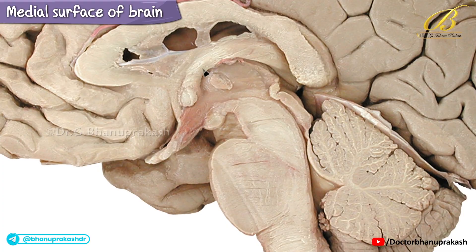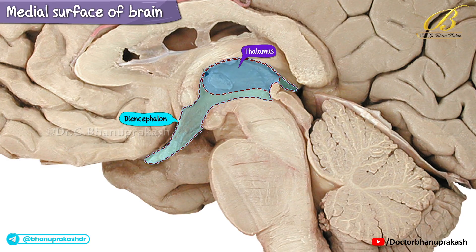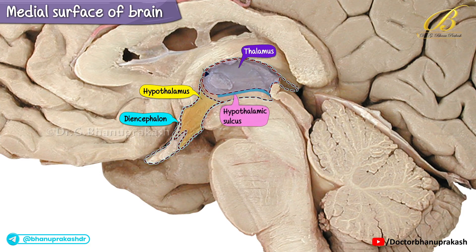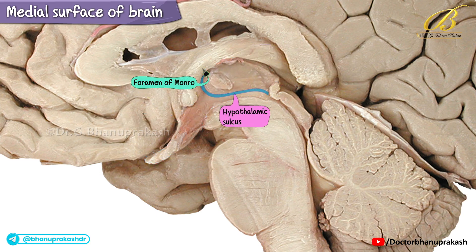This mid-sagittal section traverses the third ventricle at the midline, revealing the intricacies of the diencephalon region. Here, the thalamic portion of the diencephalon is demarcated from the hypothalamic part by a groove known as the hypothalamic sulcus. This sulcus originates at the foramen of Monroe, or the interventricular foramen, and culminates at the aqueduct of the midbrain.